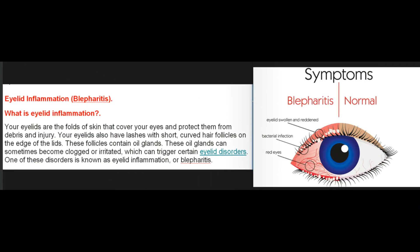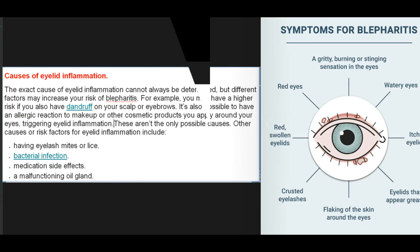Eyelid inflammation — Blepharitis: Your eyelids are the folds of skin that cover and protect your eyes from debris and injury. Your eyelids also have lashes with short curved hair follicles on the edge of the lids, and these follicles contain oil glands. These oil glands can sometimes become clogged or irritated, which can trigger certain eyelid disorders — one of which is known as eyelid inflammation, or blepharitis.